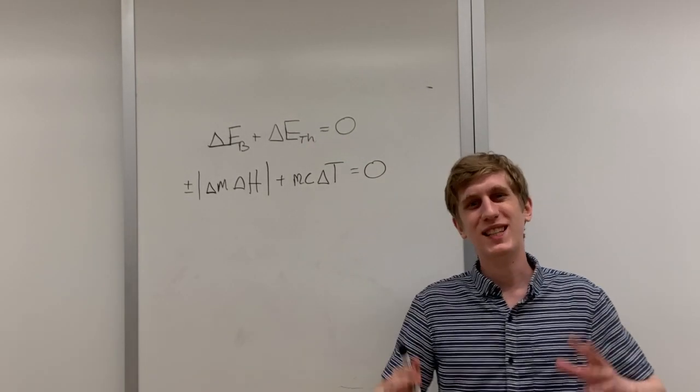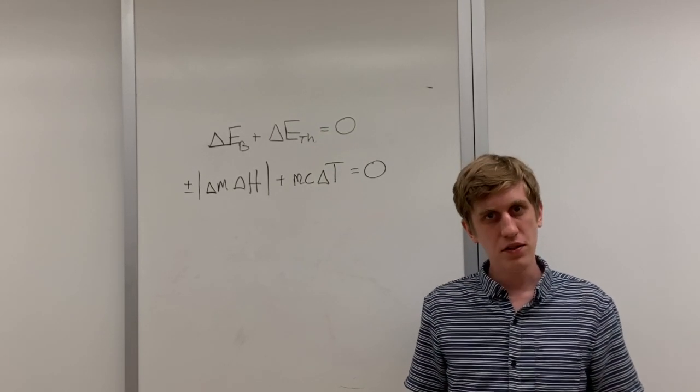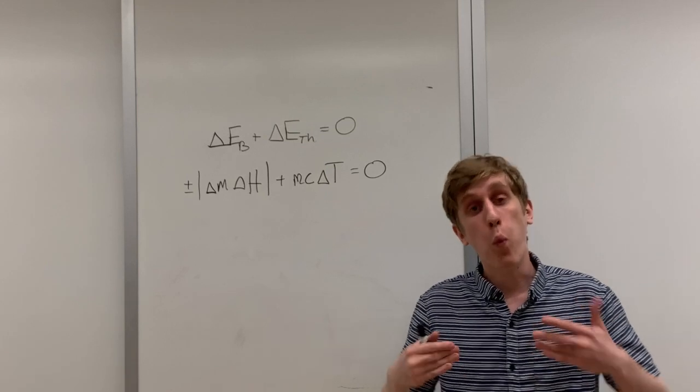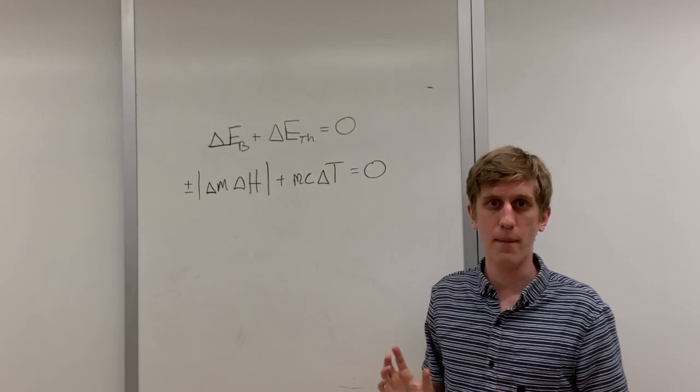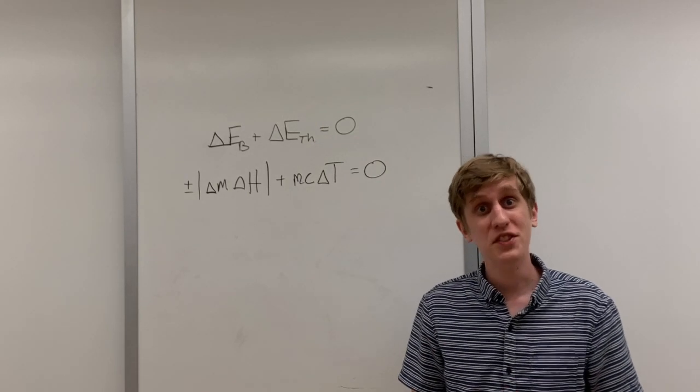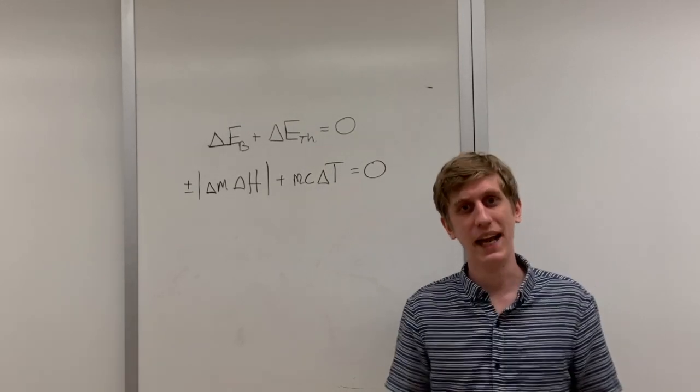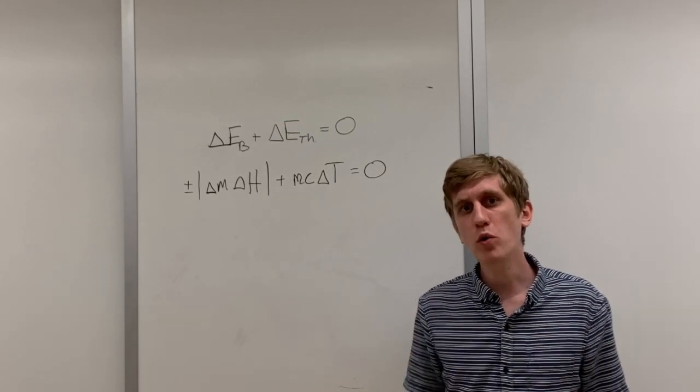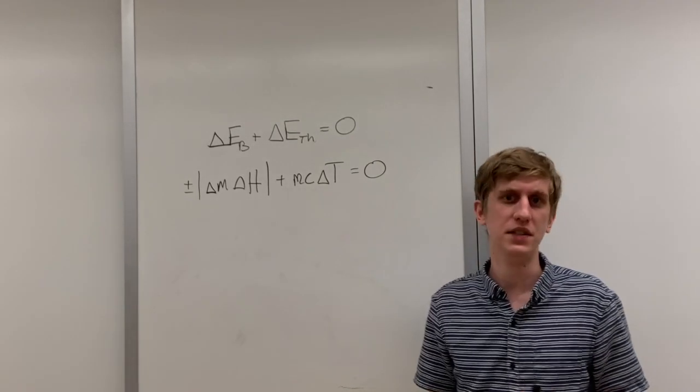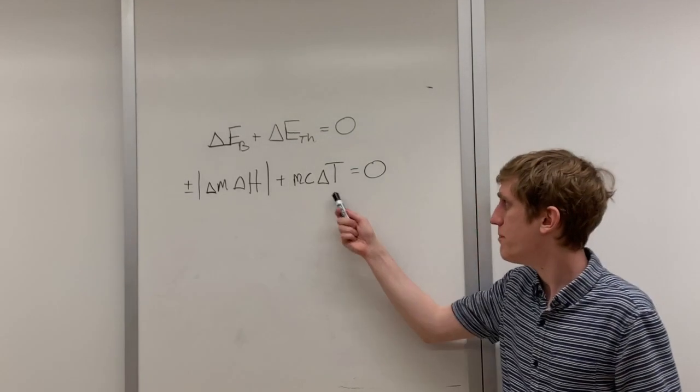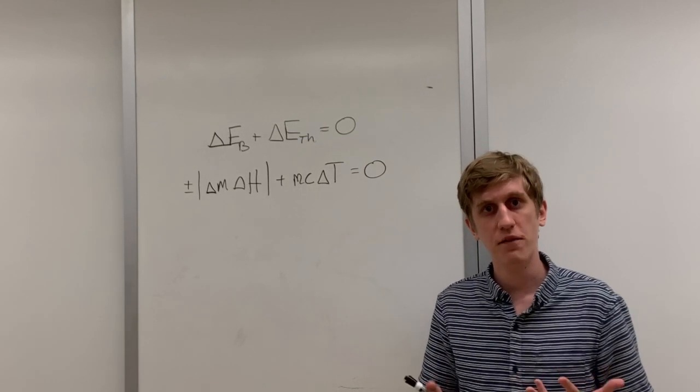C is known as the specific heat. It tells us how much energy we need to add to the substance to increase one kilogram of it by one degree celsius. There will be two ways to get this number in this course. The first is to use measurements to calculate it directly and we'll do that in later DLs. However in most cases if we're asking you to solve a problem involving specific heat we'll give you this number. The third piece is delta t which is just the change in temperature of the substance.